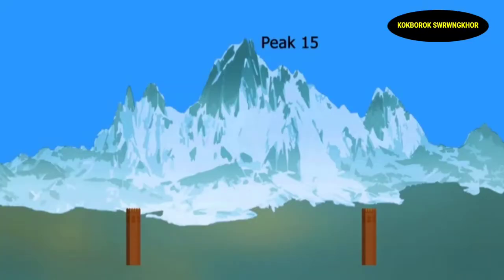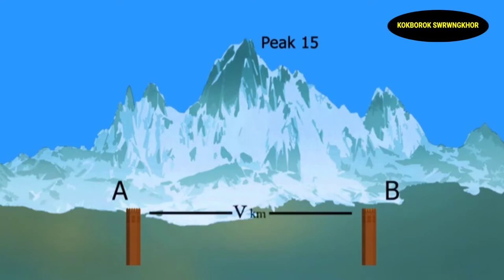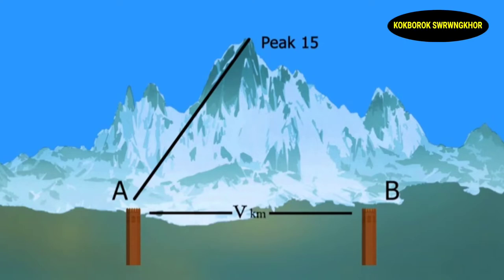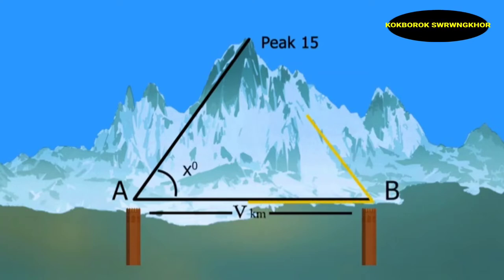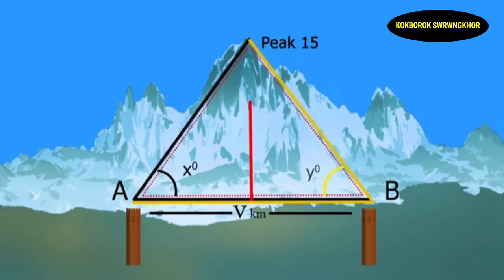For example, from location A, the distance and angle to Peak XV were measured. Then, from the same location A, the theodolite T2 light route was used to sight location B, recording the angle. Similarly, from location B, the same process was repeated, recording angles back to location A. Using both angles from locations A and B, along with the measured distance between them, the calculations proceeded.